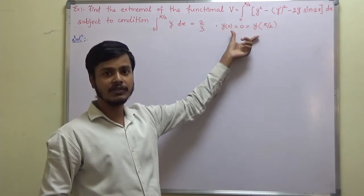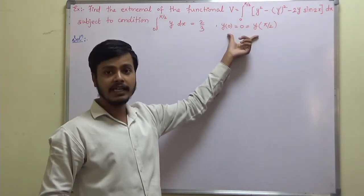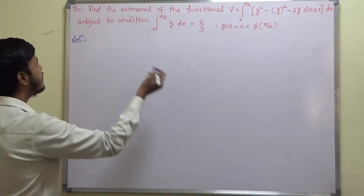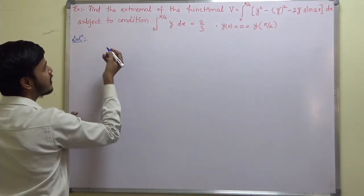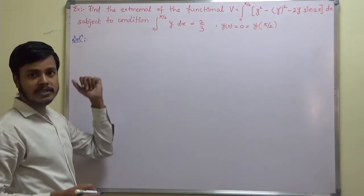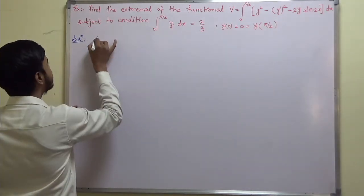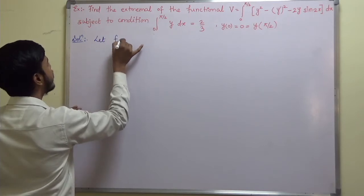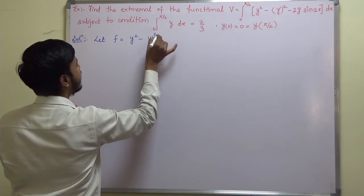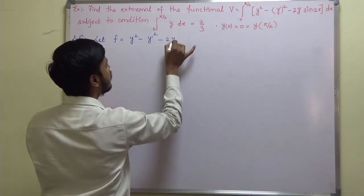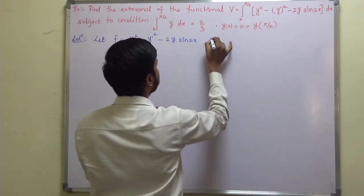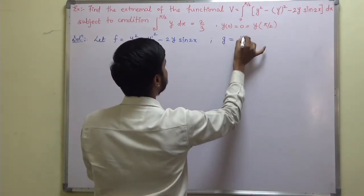These conditions are given, which will be helpful in finding out the arbitrary constants. Whenever you have a problem like this, you are smart enough to start the solution. Let us start with the functional. Let small f equal to y squared minus y-dash squared minus 2y sin(2x), and g equal to just y.